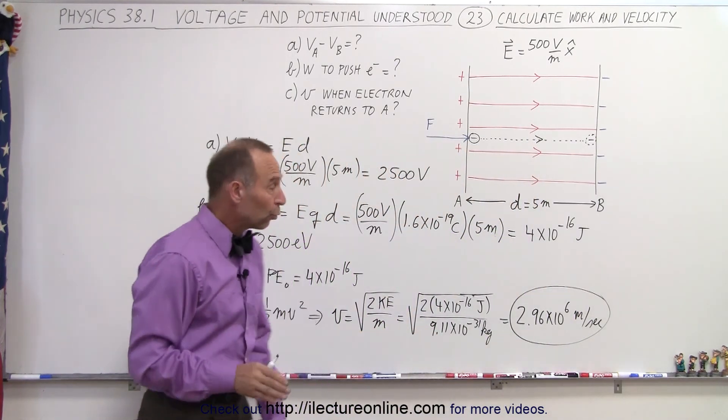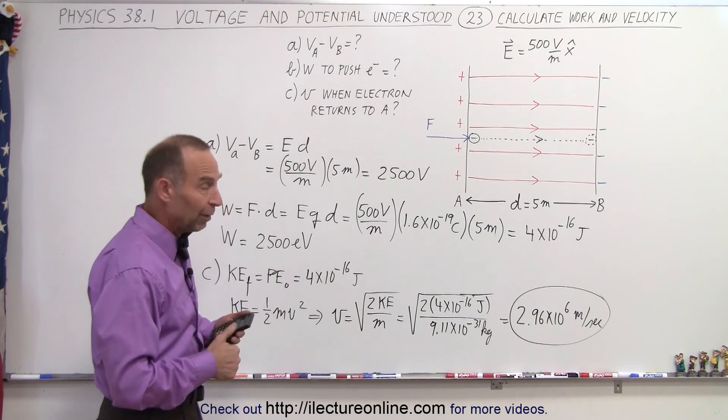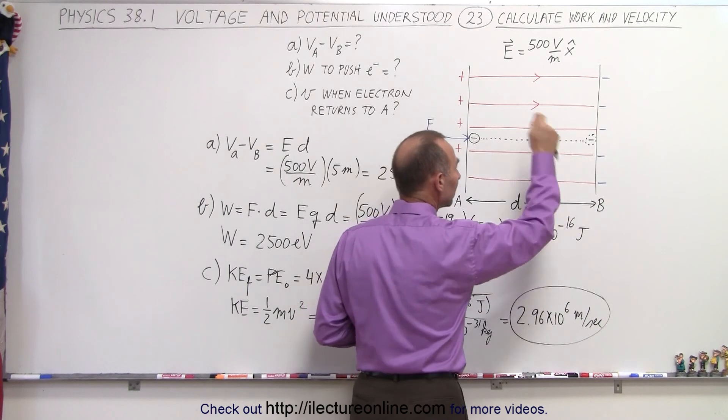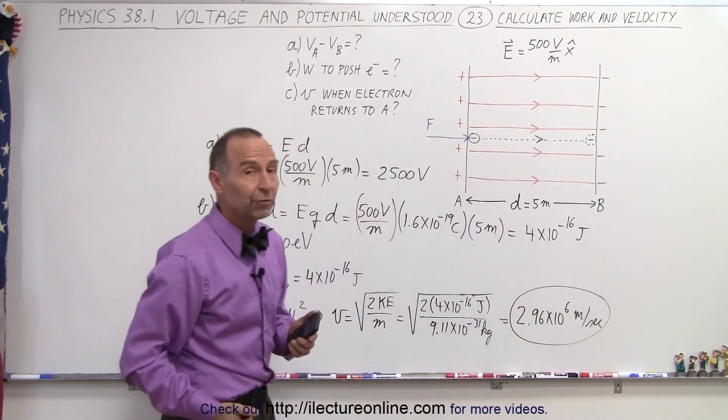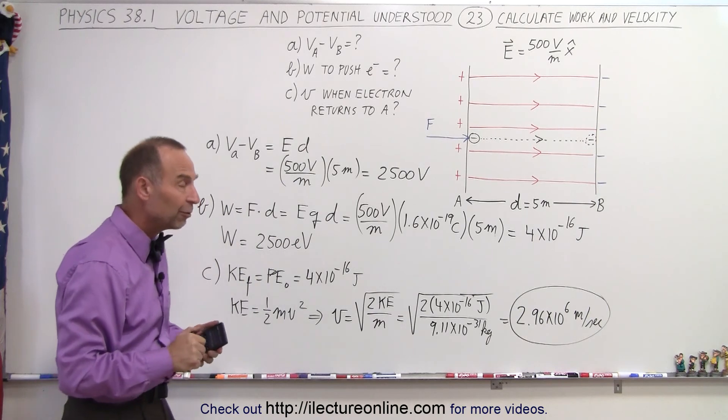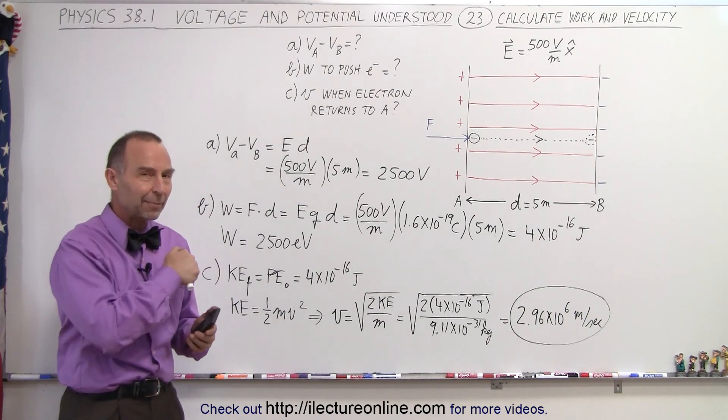Notice that's almost 1% the speed of light. So if you take an electron and you push it across a difference of 2,500 volts, and then you let go, that 2,500 volts is enough to push it back and have it attain a speed of almost 1% of the speed of light by the time it gets to the other side.